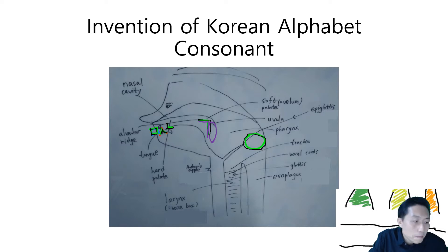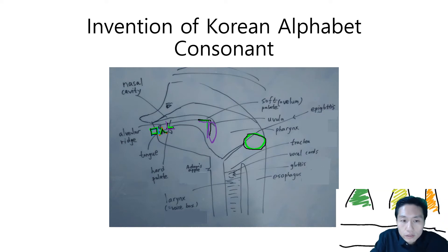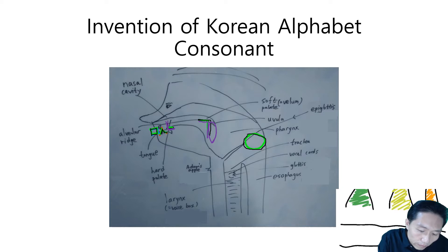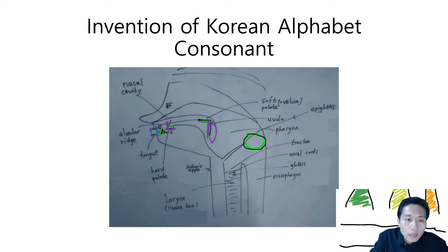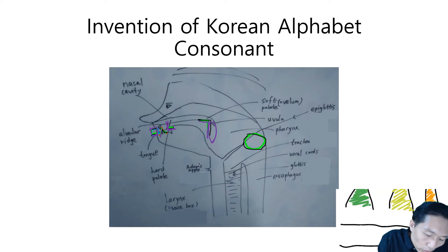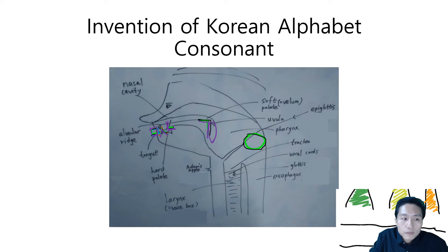Let's look at ㄴ. ㄴ — the tip of the tongue touches the palate; this is a lingual sound. And look at ㅁ — ㅁ is actually the shape of the lips, so it's a bilabial sound, called 미음. And let's look at 시옷. 시옷 actually copied the shape of teeth, so it's a dental sound.